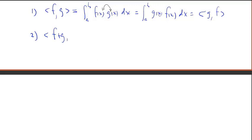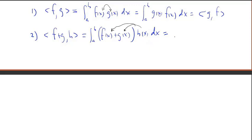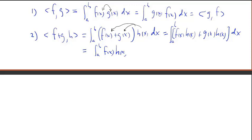Property two: the inner product of f plus g with another function h equals the integral from a to b of (f(x) + g(x)) times h(x) dx. By the distributive property of multiplication over addition, we distribute h to f and g, giving the integral of f(x)h(x) + g(x)h(x) dx. We can break this into two integrals: the integral from a to b of f(x)h(x) plus the integral from a to b of g(x)h(x), which is the inner product of f with h plus the inner product of g with h.